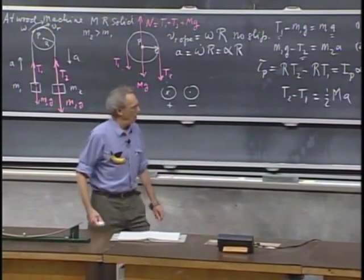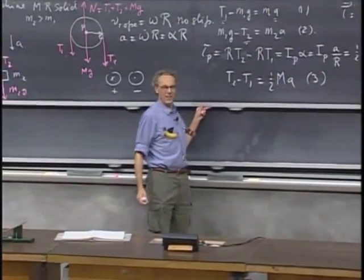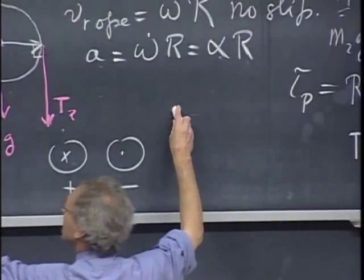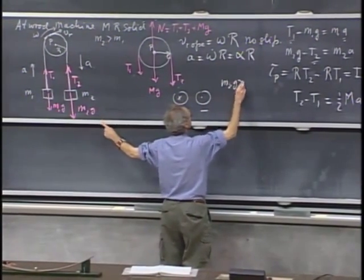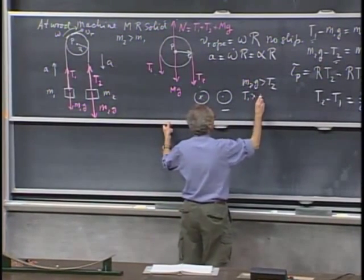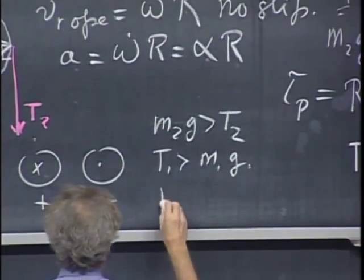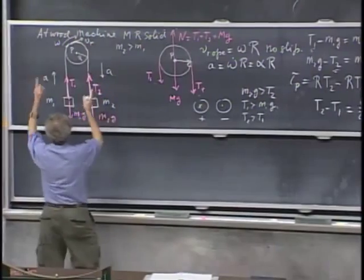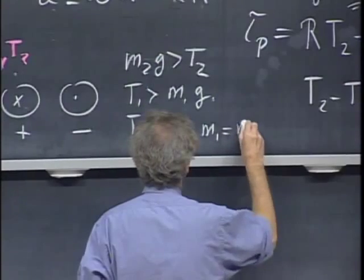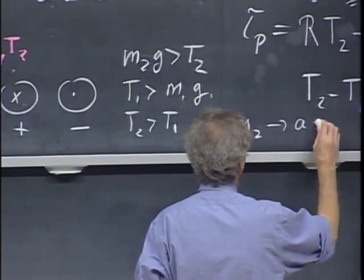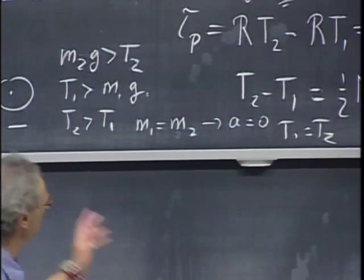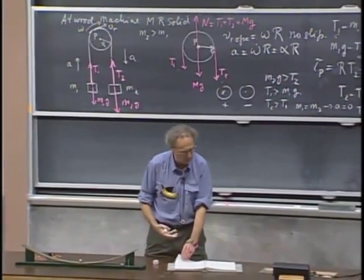Now I have three equations and can solve for T1, T2, and A. When you find results, always do a little testing to check they make sense. You should verify that m2 g is larger than T2, and that T1 is larger than m1 g, and that T2 is larger than T1 — otherwise the pulley wouldn't rotate clockwise. Also substitute m1 equals m2: that should give acceleration zero and T1 equals T2. These trivial checks take no more than ten seconds, and if any one fails, you've slipped up somewhere.